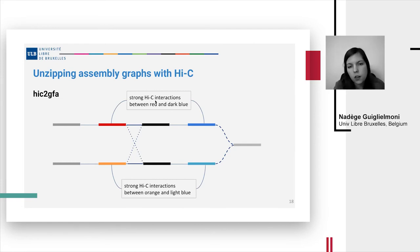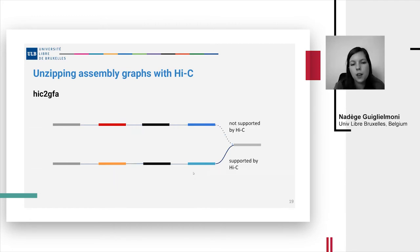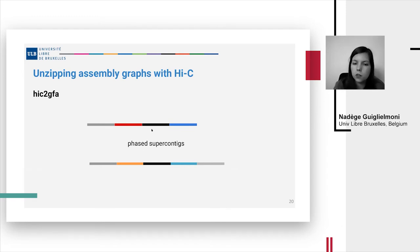Then we see that there are strong Hi-C interactions between red and dark blue and between orange and light blue. So red is connected to dark blue and orange to light blue. And finally, we have a link from dark blue to gray that is not supported by Hi-C data and one from light blue to gray that is supported by Hi-C data. So we connect gray only to light blue and we finally obtain our phased super contigs. And as all the junctions have been made based on existing links in the assembly graph, then we don't have gaps in our super contigs.